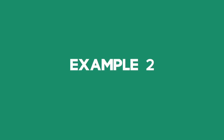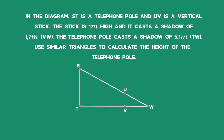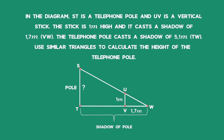Example 2. In the diagram, ST is a telephone pole and UV is a vertical stick. The stick is 1 meter high and it casts a shadow of 1.7 meters, VW. The telephone pole casts a shadow of 5.1 meters, TW. Use similar triangles to calculate the height of the telephone pole.